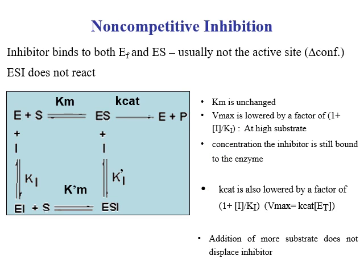Looking at non-competitive inhibition: unlike competitive inhibition, which only binds to the free enzyme, the non-competitive inhibitor will bind both to the free enzyme and also to the enzyme-substrate complex. This forms both an enzyme-inhibitor complex and an enzyme-substrate-inhibitor complex. You can differentiate between competitive and non-competitive inhibition by examining their plots.